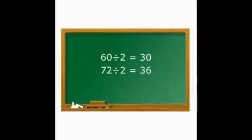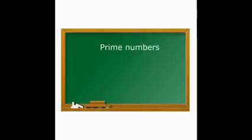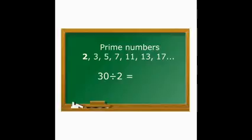So now we have 30 and 36. Can we still simplify them? Yes. So let's pick the prime number 2 again. 30 divided by 2 is 15, while 36 divided by 2 is 18. Can we still simplify 15 and 18?